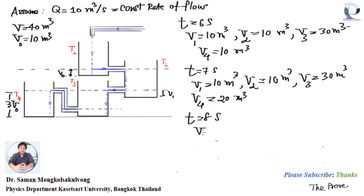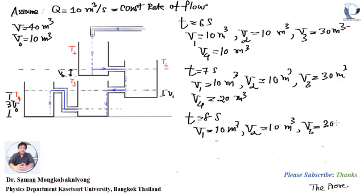For t equals 8 seconds, V1 is equal to 10 mq, V2 is equal to 10 mq, V3 is equal to 30 mq, and V4 is equal to 30 mq. Now V4 has reached the same water level.